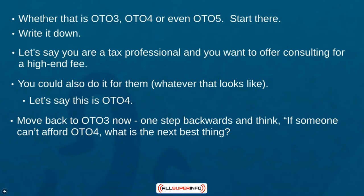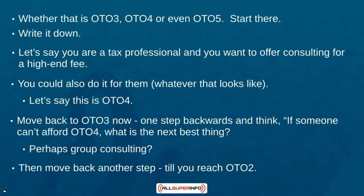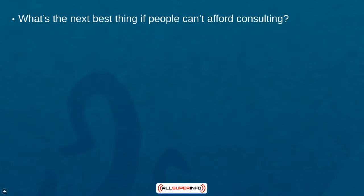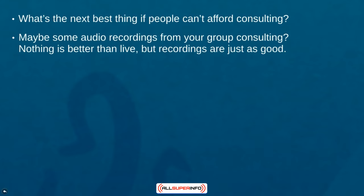Moving one step backwards: if someone cannot afford one-time offer number four, what is the next best thing? What we like to do is take a piece of that and move backwards. Perhaps group consulting could be one-time offer number three, while one-time offer number four is one-on-one personal consulting. Then move backwards again — what could one-time offer number two be? Take a piece of that and move back. By taking a piece and moving backwards, you're creating a related, congruent one-time offer funnel.